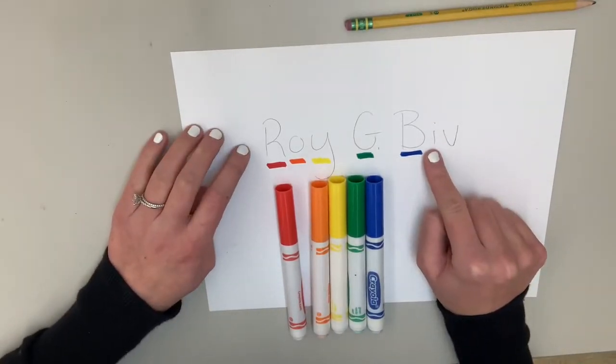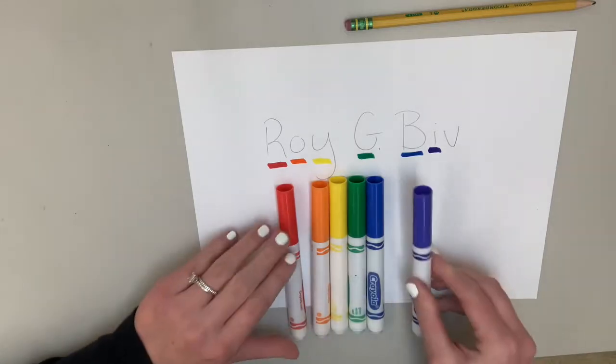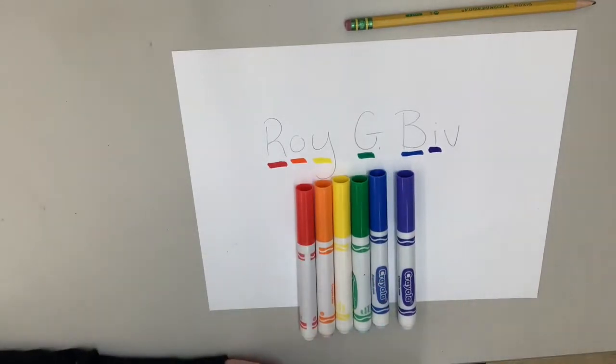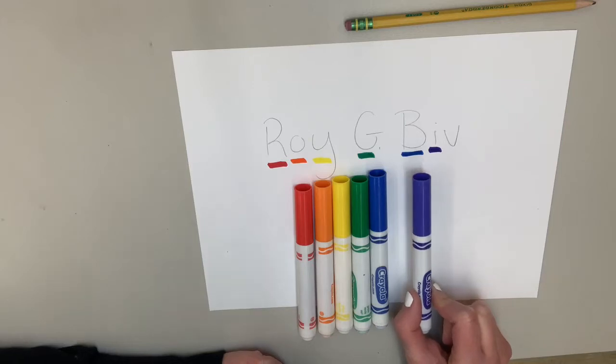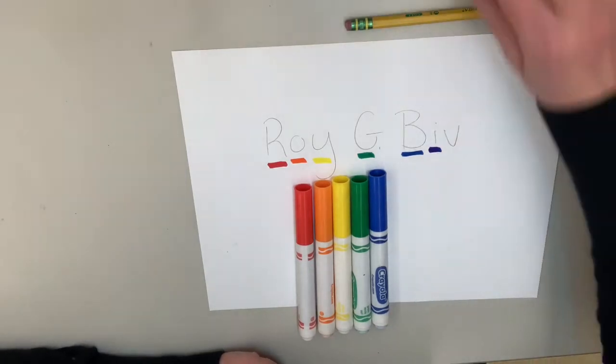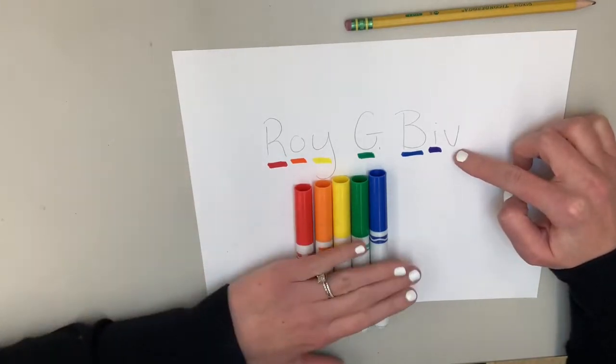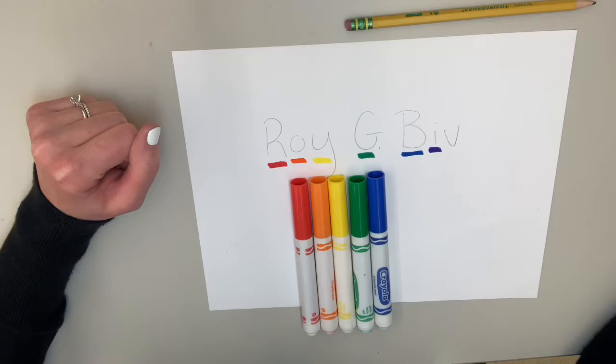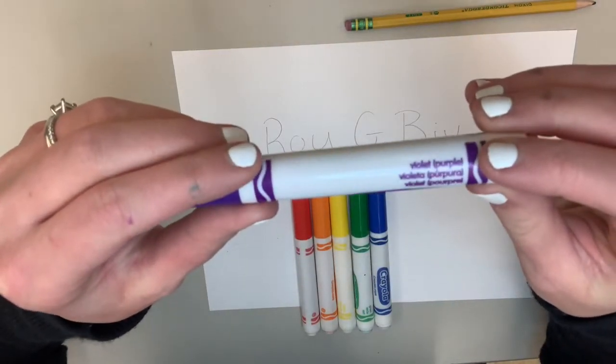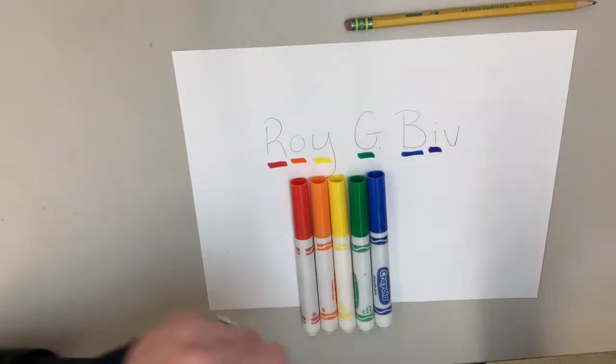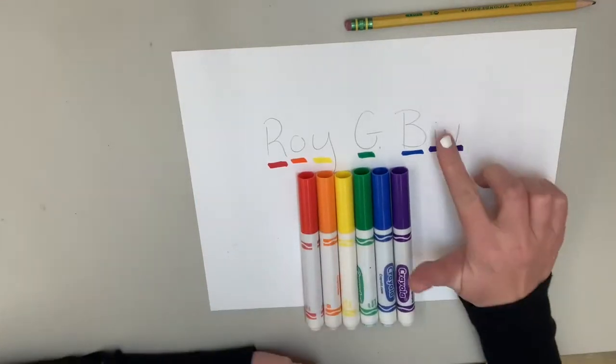So red is our first color you're going to need. Our second color is O. Orange is our second color, because orange starts with an O. Our third letter here is a Y. The color yellow starts with the letter Y. These are our first three colors in our rainbow. Roy. Now we get to our G. G is for the color green.